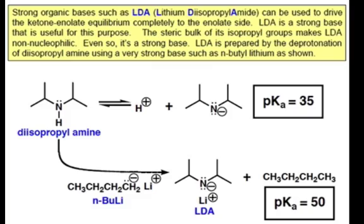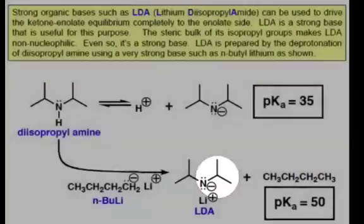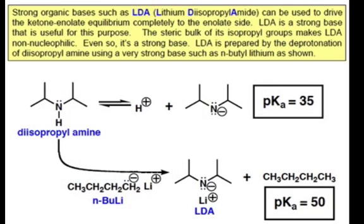Additionally, the steric bulk provided by the isopropyl groups on LDA renders it non-nucleophilic and not amenable to attacking the carbonyl carbon. Therefore it strictly functions to deprotonate the alpha protons on the alpha carbons. We've seen this feature built into bases before in our use of potassium tert-butoxide in our studies of the E2 mechanism.